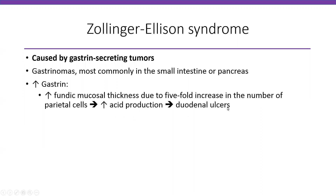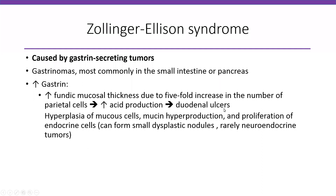Due to the increased number of parietal cells, you have increased acid production leading to duodenal ulcers. Whenever you have a lot of acid, you can have duodenal ulcers. You also have hyperplasia of the mucous cells — the gastric foveolar cells — mucin hyperproduction, and proliferation of endocrine cells. Sometimes this proliferation of endocrine cells can cause dysplastic nodules and rarely can cause neuroendocrine tumors.